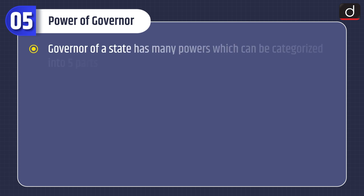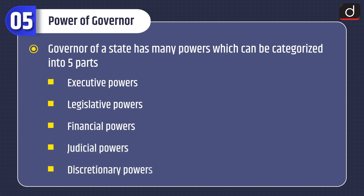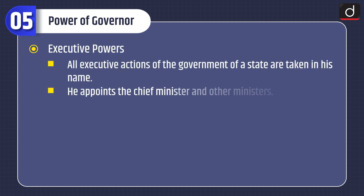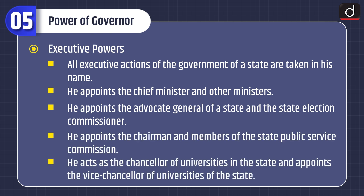Let's discuss about the power of governor. The governor of a state has many powers which can be categorized into five parts: executive powers, legislative powers, financial powers, judicial powers and discretionary powers. Under executive powers, all executive actions of the government of a state are taken in his name. He appoints the chief minister and other ministers, the advocate general of a state, the state election commissioner, the chairman and members of the state public service commission. He also acts as the chancellor of universities in the state and appoints the vice chancellor of universities.